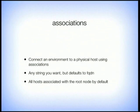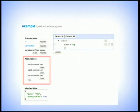Associations connect environments to physical hosts. It can be any string you want, but it defaults to the fully qualified domain name of the host your app is running on. By default, all hosts are associated with the root node. In our new Q example, we're associating this config with web1-3.example.com, so those machines will use ZeroMQ rather than Rabbit.